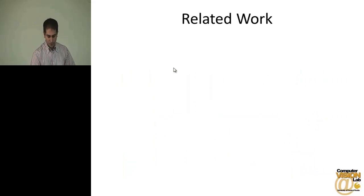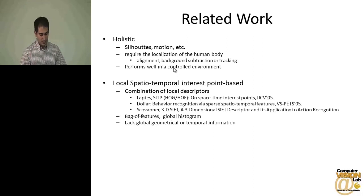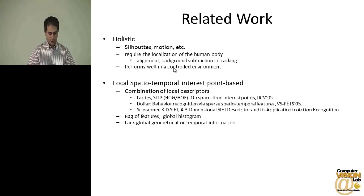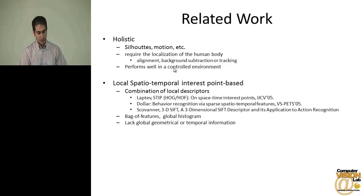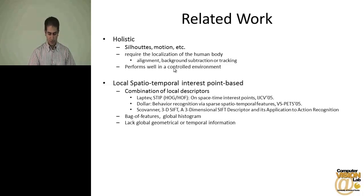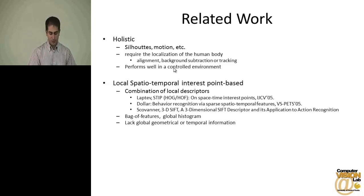Here I will talk briefly about related work on human action recognition. You may divide the methods into two broad groups. One is the holistic approach, where silhouettes, human body joints, motion, or contours can be modeled to classify human actions. These methods require the localization of the human body through alignment, background subtraction, or tracking, and these settings may not be available in uncontrolled environments.